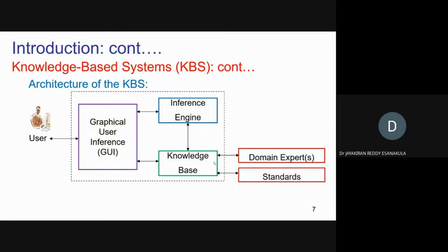Let me explain how the knowledge-based system works. A user wants a solution for a particular problem. He uses the GUI to give the problem to the system — through questions in the GUI he explains the problem. Based on those questions, the system first goes to the inference engine. After getting the question from the GUI, the system goes to the inference engine.